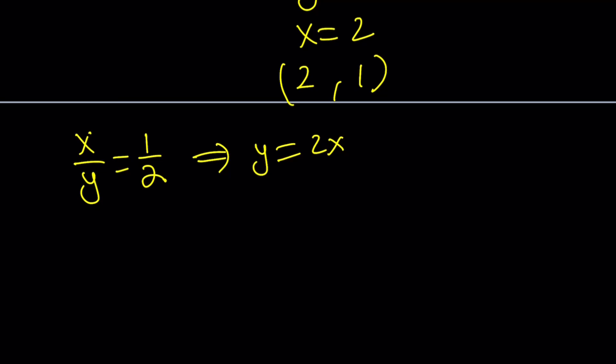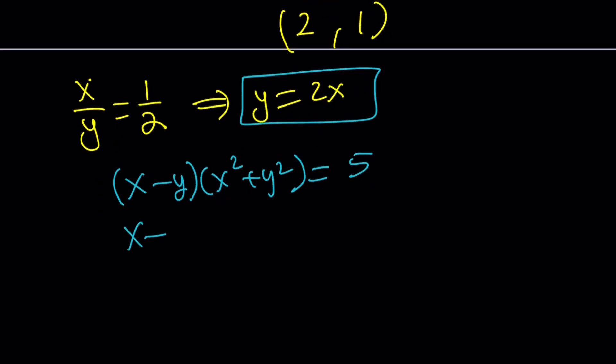Again, let's use one of these equations. It doesn't matter which one. Let's use the second one for fun. So, the second equation was x minus y times x squared plus y squared equals 5. And now replace y with 2x. That's going to give you x minus 2x. And then x squared plus 4x squared equals 5. This is negative x. That's 5x squared.